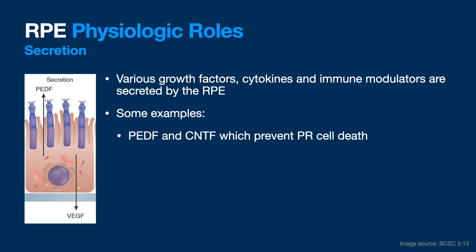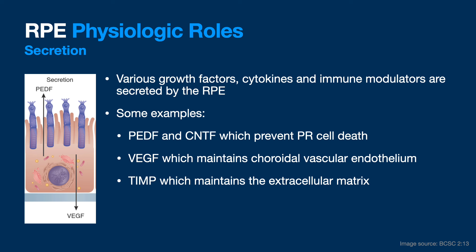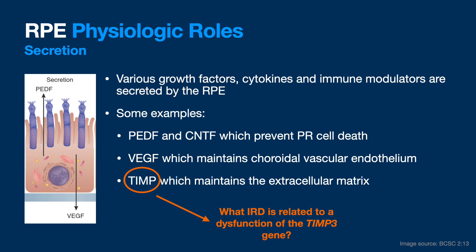The RPE secretes different factors. Examples include pigment epithelial-derived factor (PEDF) and ciliary neurotrophic factor (CNTF), which prevent photoreceptor cell death. VEGF helps the choroidal vascular endothelium. TIMP3 maintains the extracellular matrix. What IRD is related to dysfunction of TIMP3? That's Sorsby macular dystrophy.